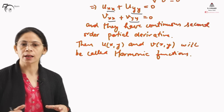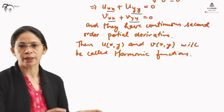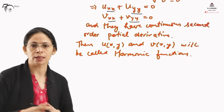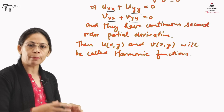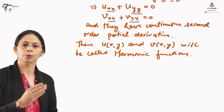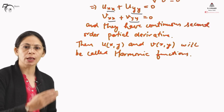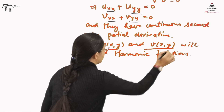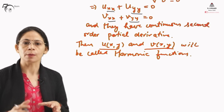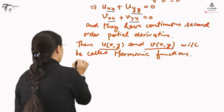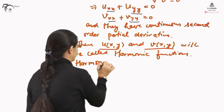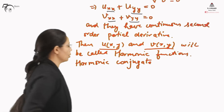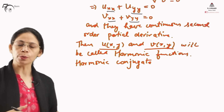U and V are nothing but the real and imaginary parts of a complex variable. Since F(Z) is analytic, both of them satisfy the Cauchy-Riemann equations. Both satisfying the CR equations and the Laplace equation makes them harmonic functions, and since they are the real and imaginary parts, they are called harmonic conjugates to each other.